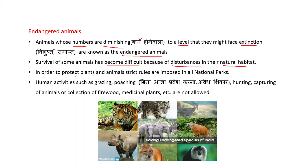In order to protect plants and animals, strict rules are imposed in national parks. Human activities such as grazing, poaching — which means entering without permission or illegal hunting — capturing of animals, or collection of firewood and medicinal plants, etc. are not allowed.